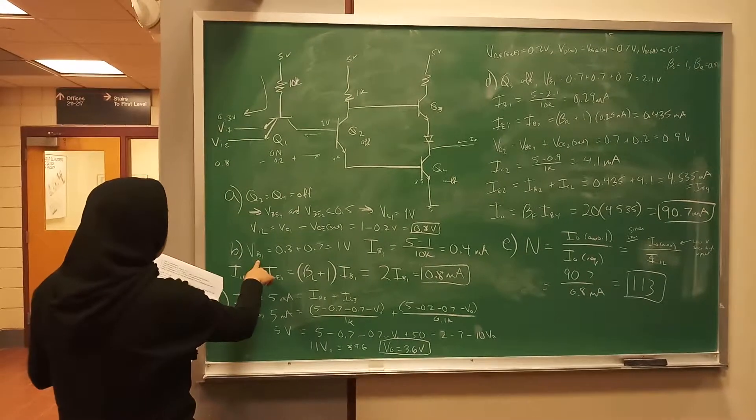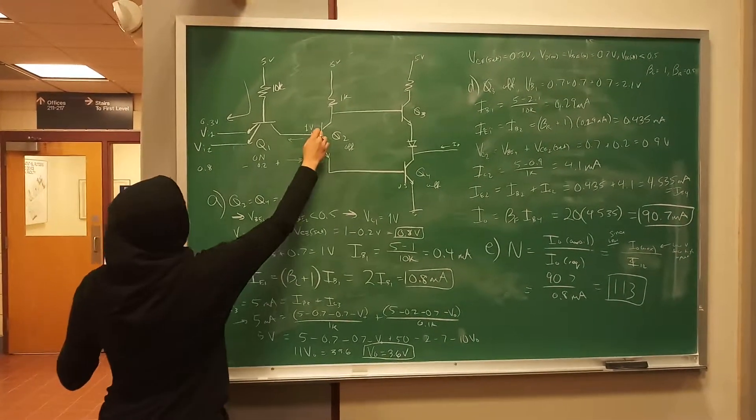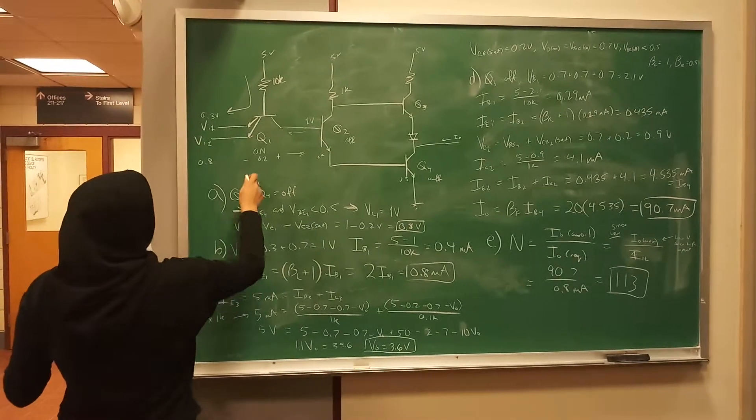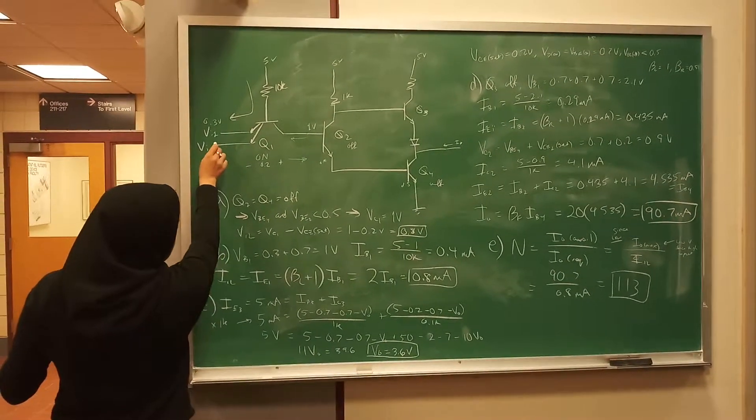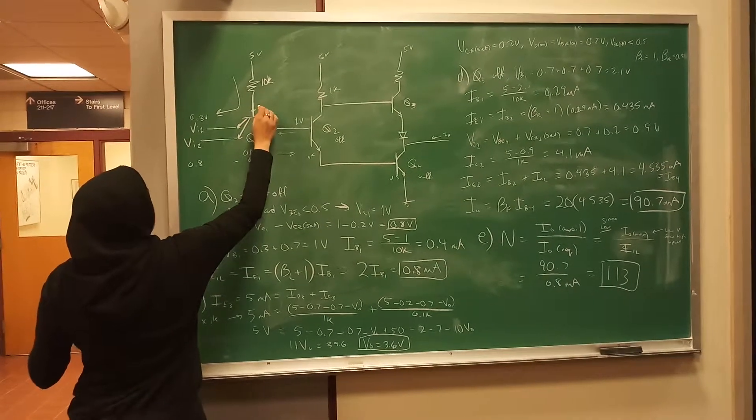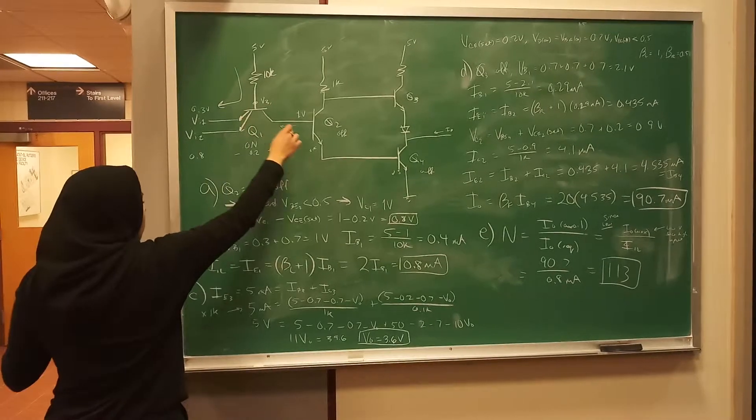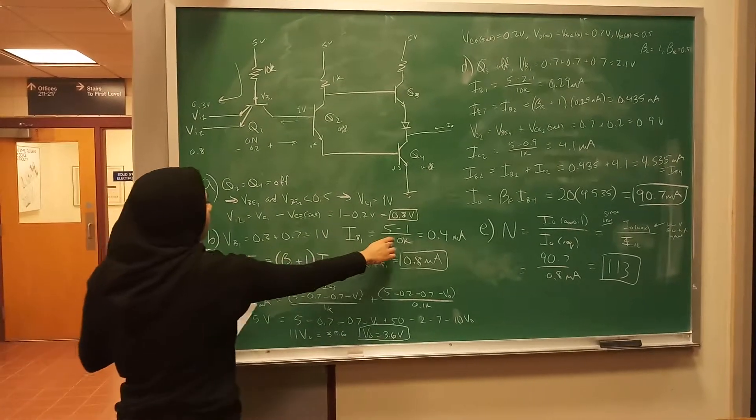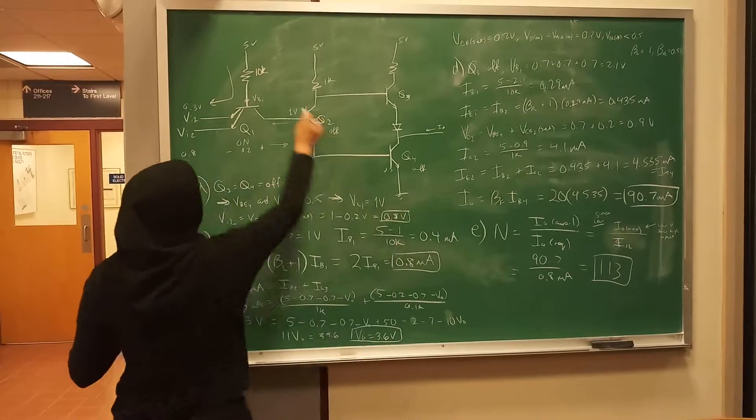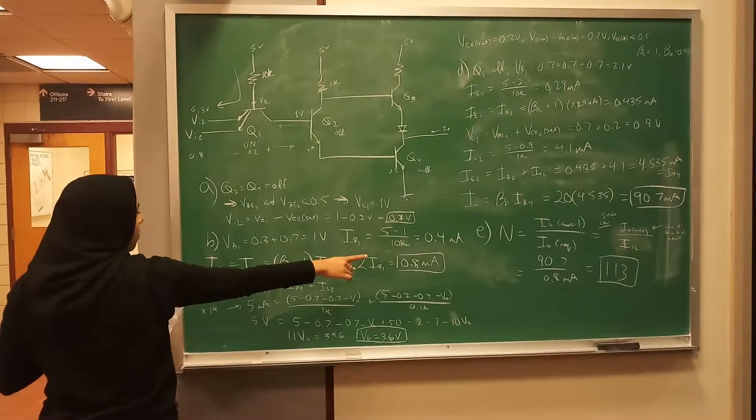So V_B1 is going to be this one right here. So it's 0.3 plus 0.7. Oh no, this one. This is V_B1. It's 0.3 plus 0.7 is 1 volt. And then we get I_beta_1 as 5 minus 1 over 10k is 0.4 milliamps.